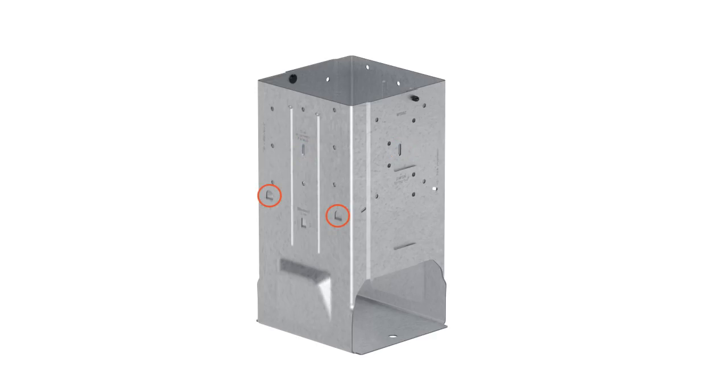Rounded internal tabs provide the code-required 1-inch standoff to help prevent rot from standing water and ground moisture. A stamped embedment line and squared internal tabs identify the required concrete depth.